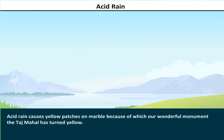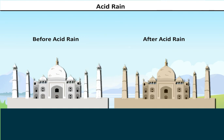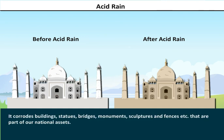Acid rain causes yellow patches on marble, because of which our wonderful monument, the Taj Mahal, has turned yellow. It corrodes buildings, statues, bridges, monuments, sculptures, and fences that are part of our natural assets.